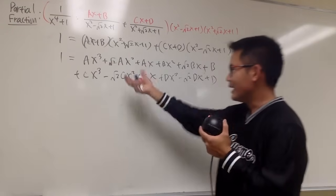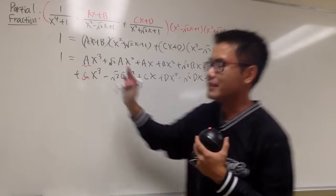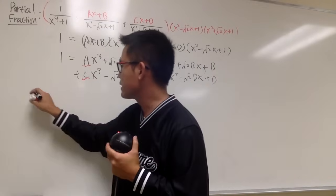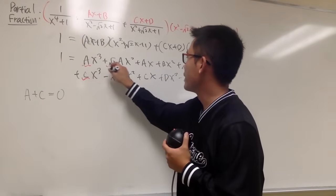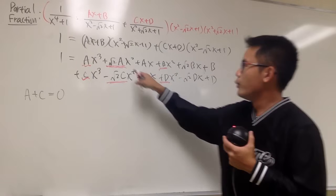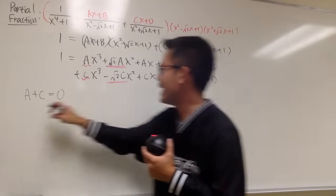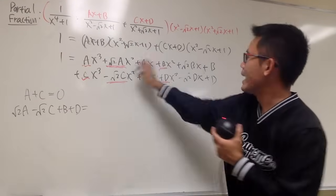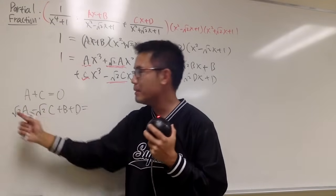Now set up the coefficients. The coefficient of x cubed on the right-hand side is a plus c, but on the left we have no x cubed, so a plus c equals 0. For x squared terms, we have square root of 2a minus square root of 2c plus b plus d, and that also equals 0, since there's no x squared on the left.